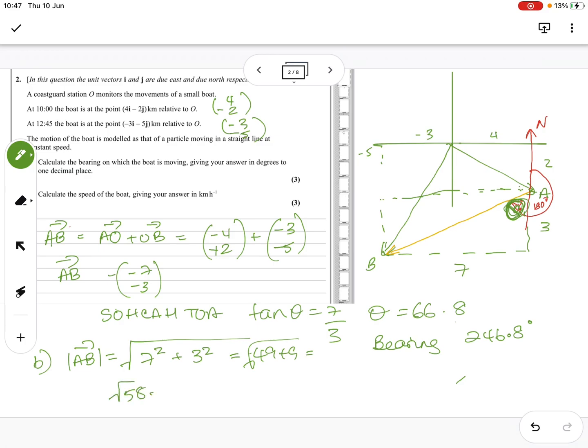So speed equals distance divided by time. And we know, what did they say? The distance is root 58, and the time was two hours and 45 minutes, which as a decimal is three quarters of an hour, so it's 2.75. And if I do root 58 divided by 2.75, I get something horrible, which changes to 2.76937 kilometers per hour, which to three sig figs is 2.77.